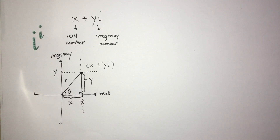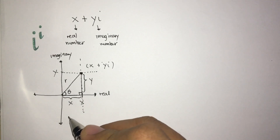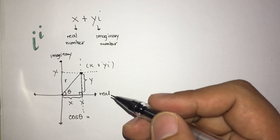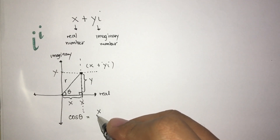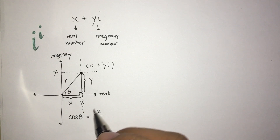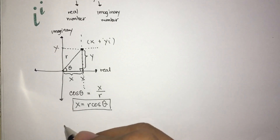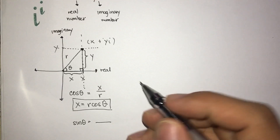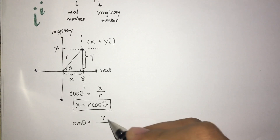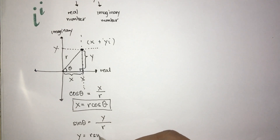If we want to find the representations of x and y in terms of r and theta using this right triangle, we can use trigonometric functions. We know that cosine theta equals the adjacent over the hypotenuse, so cosine theta equals x over r, and solving for x we have x equals r cosine theta. Likewise, sine theta equals opposite over hypotenuse, y over r, and solving for y we have y equals r sine theta.